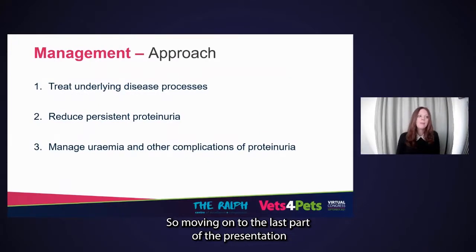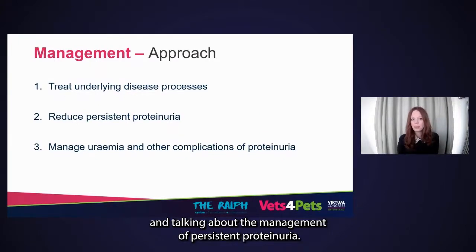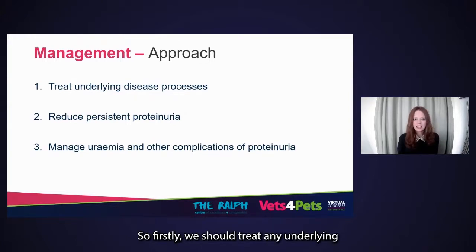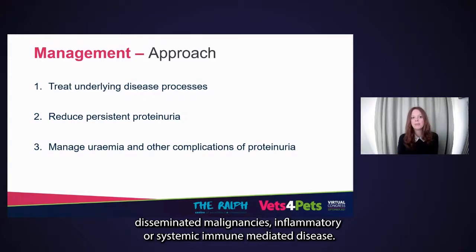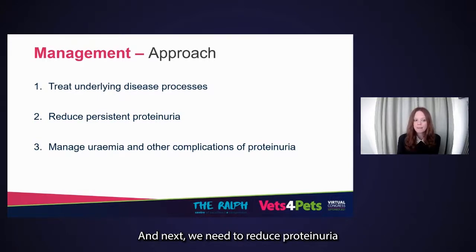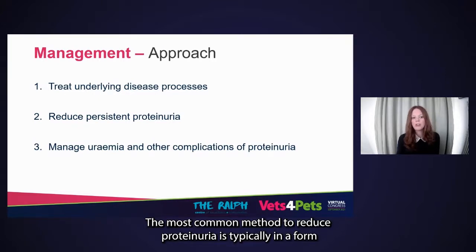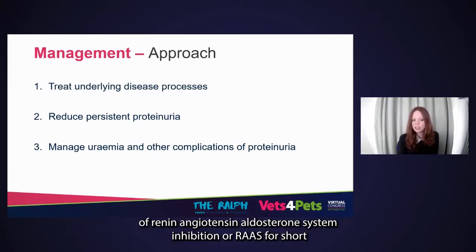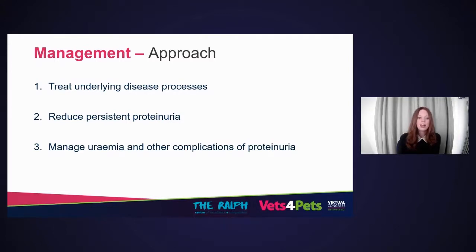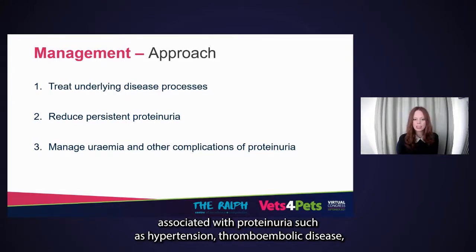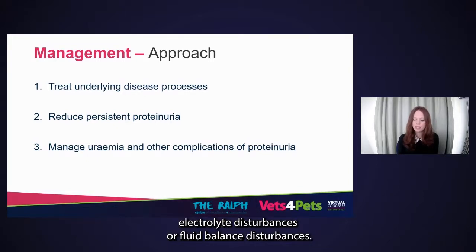Moving on to the management of persistent proteinuria. There are three key steps: firstly, treat any underlying disease processes such as urinary tract infections, disseminated malignancies, or inflammatory and systemic immune-mediated disease. Next, reduce proteinuria — glomerular and tubular proteinuria tend to be the most common causes of persistent proteinuria, and the most common method is renin-angiotensin-aldosterone system or RAS inhibition. Finally, manage or prevent possible complications associated with proteinuria, such as hypertension, thromboembolic disease, electrolyte disturbances, or fluid balance disturbances.